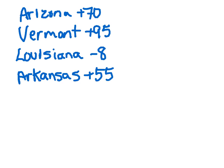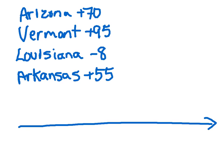Now we're going to go ahead and plot all this data on a number line. You would normally use a ruler, but I'll just draw this out quickly. Looking at it, what's our greatest number? Vermont at plus 95. And the lowest point would be negative 8 with Louisiana. So looking at this number line, we need to break it up into intervals — we could probably do this with intervals of 10.